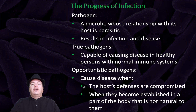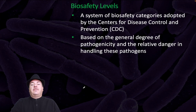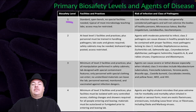A pathogen is a microbe whose relationship with its host is parasitic — it results in infection and disease. True pathogens are capable of causing disease in healthy persons with normal immune systems. Opportunistic pathogens cause disease when the host defenses are compromised, or when they become established in a part of the body not natural to them. Biosafety levels are a system of biosafety categories adopted by the CDC, based on general degree of pathogenicity and relative danger in handling these pathogens. Biosafety level one can be used on standard open benches with no special facilities needed — typical of most microbiology teaching labs. They pose a low infection hazard, and microbes are generally not considered pathogens and will not colonize the bodies of healthy persons.